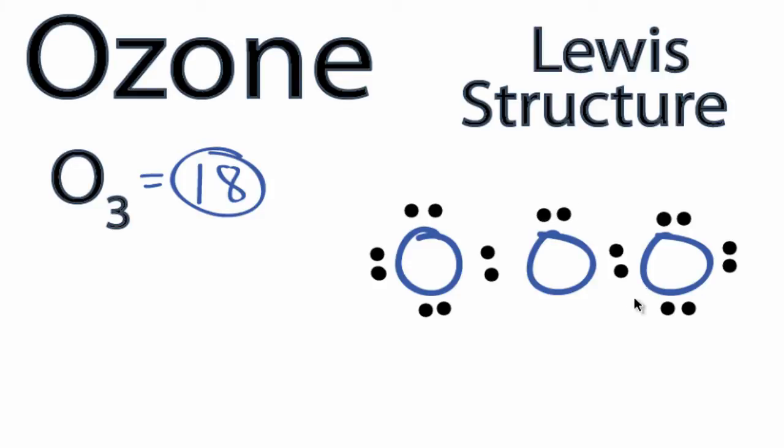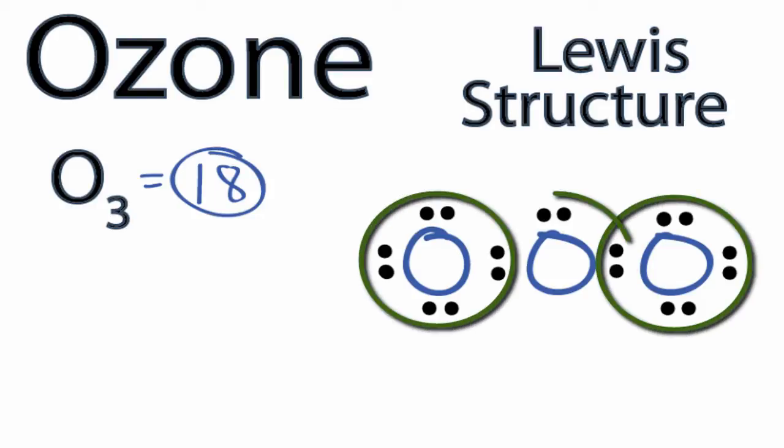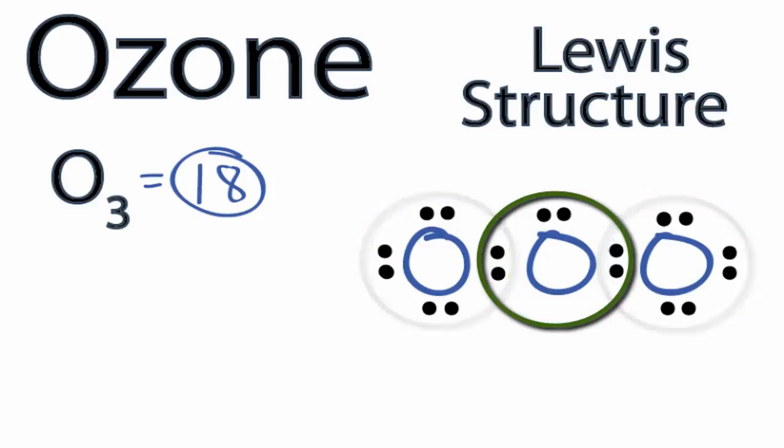Eighteen valence electrons for ozone. You can see the oxygens on the end have eight valence electrons, so their octets are full, but the oxygen in the center only has six valence electrons.